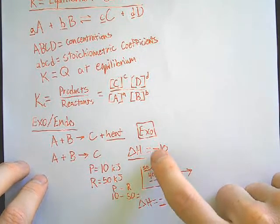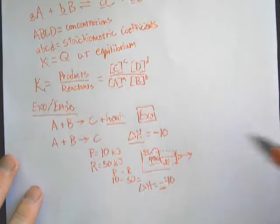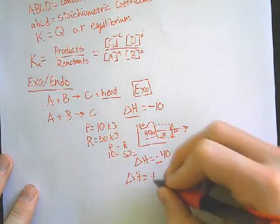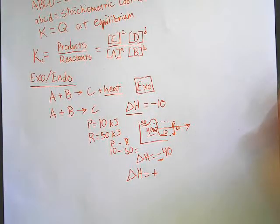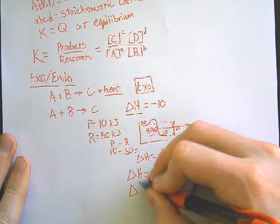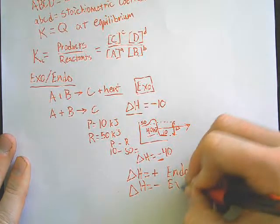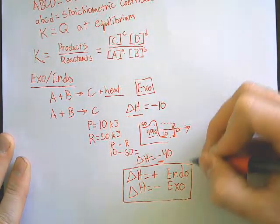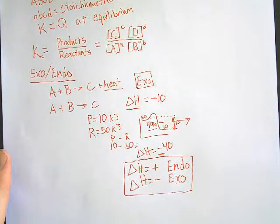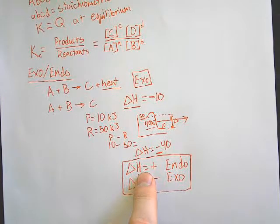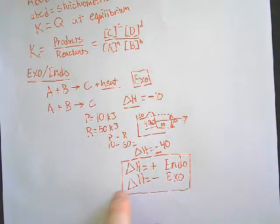So I want to make sure you're used to seeing that even though we put plus heat on the product side, they can also say your delta H is negative. On the flip side, if delta H is positive, that would be endothermic. So let's put: delta H equals negative — exothermic. Put a box around that. Delta H positive — endo. Delta H negative — exo.